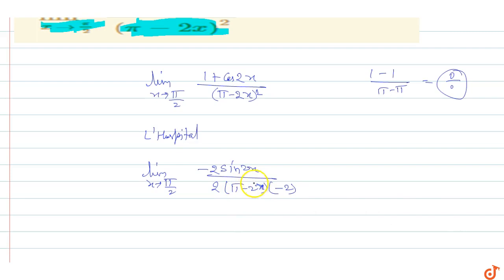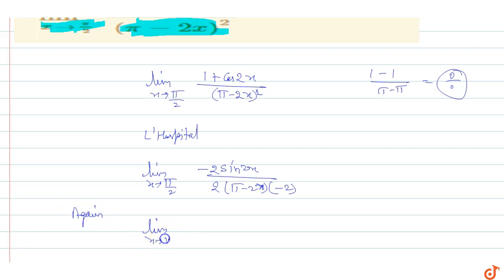At x = π/2 we get 0/0 again, so we apply L'Hôpital's rule a second time. Again using L'Hôpital: differentiating the numerator and denominator separately.